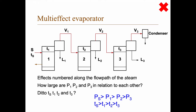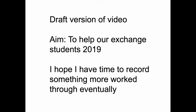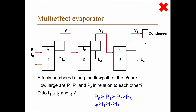In this schematic view we have only shown the path of the steam. The fresh steam comes in here and the steam produced in evaporator one goes into evaporator two, the steam produced in evaporator two goes into evaporator three and so on. But what about the other side, the feed side? To understand the different feed patterns of multi-effect evaporators and why we choose different ones, we need to look at concentration, viscosity and temperature.